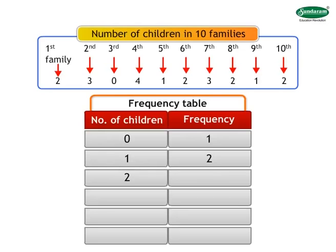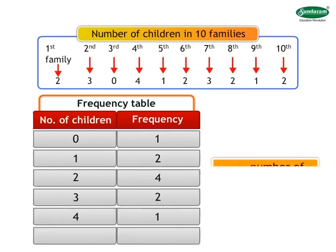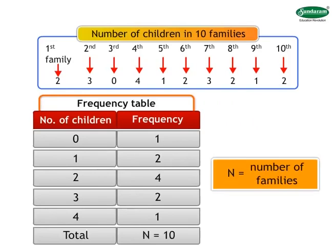Frequency of 2 is equal to 4. Frequency of 3 is equal to 2. Frequency of 4 is equal to 1. Then find the total frequency by adding all the frequency together. See the table on the screen.